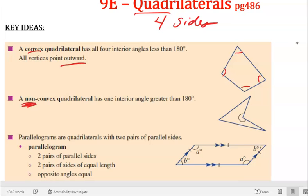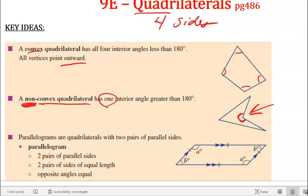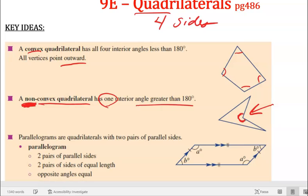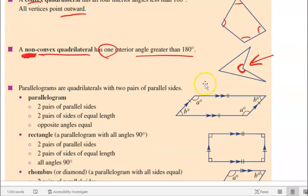A non-convex quadrilateral has one interior angle greater than 180 degrees. You can spot it by the pointy-inny bit. If you want to measure it, check that one interior angle is greater than 180 — remember a straight line is 180 — and if it's greater than that, you've got a non-convex quadrilateral.